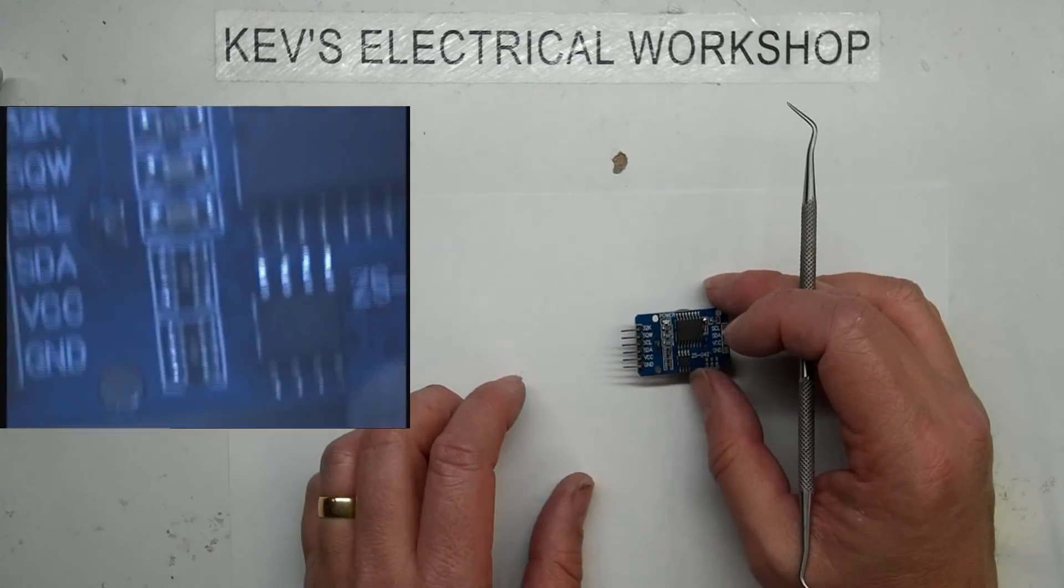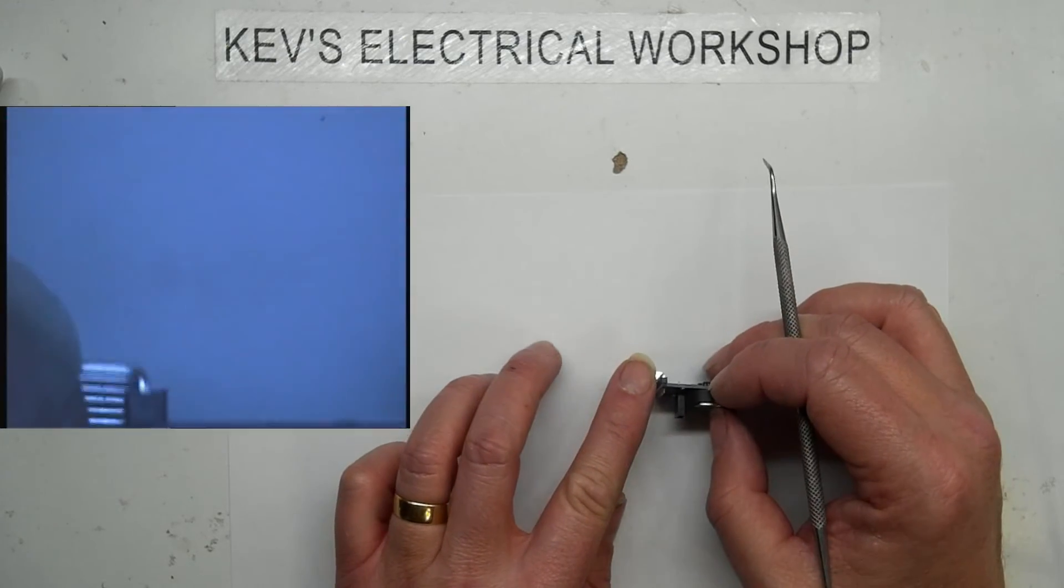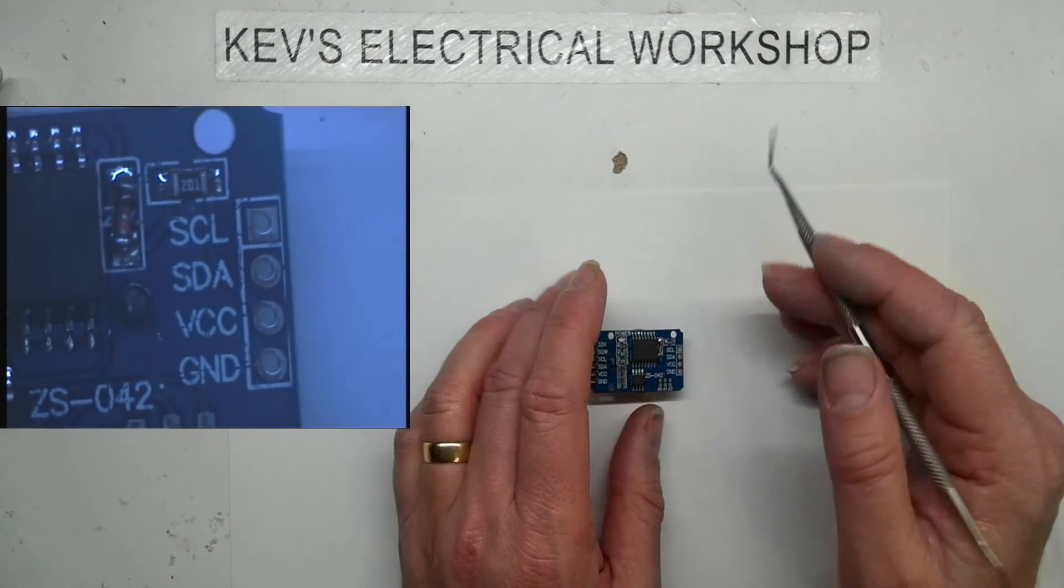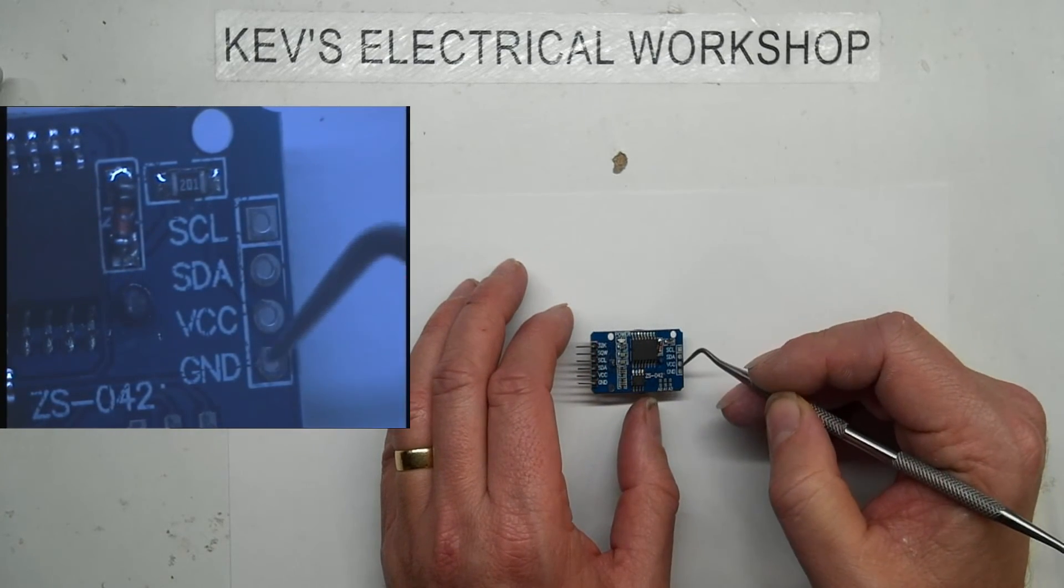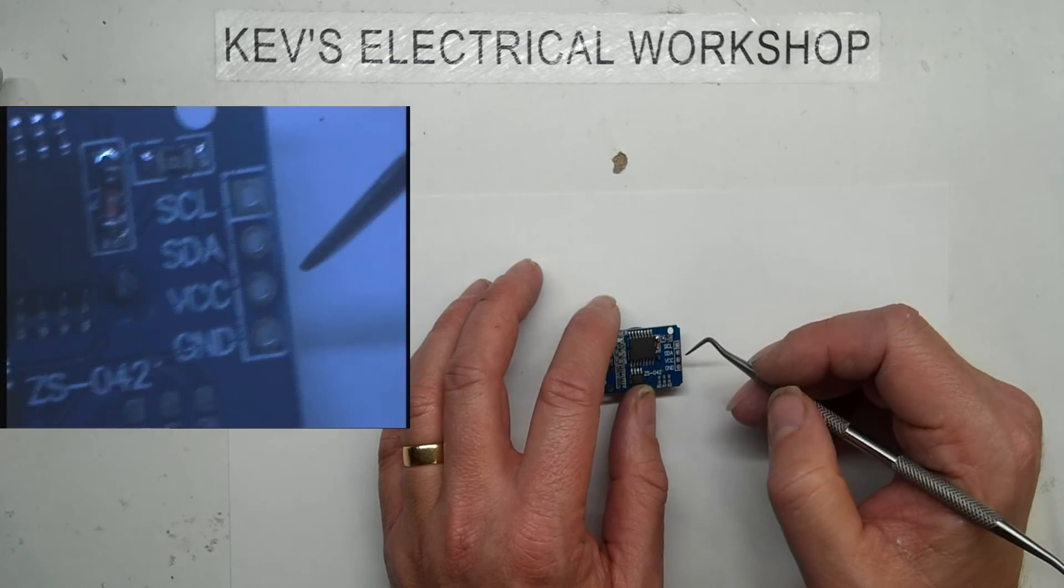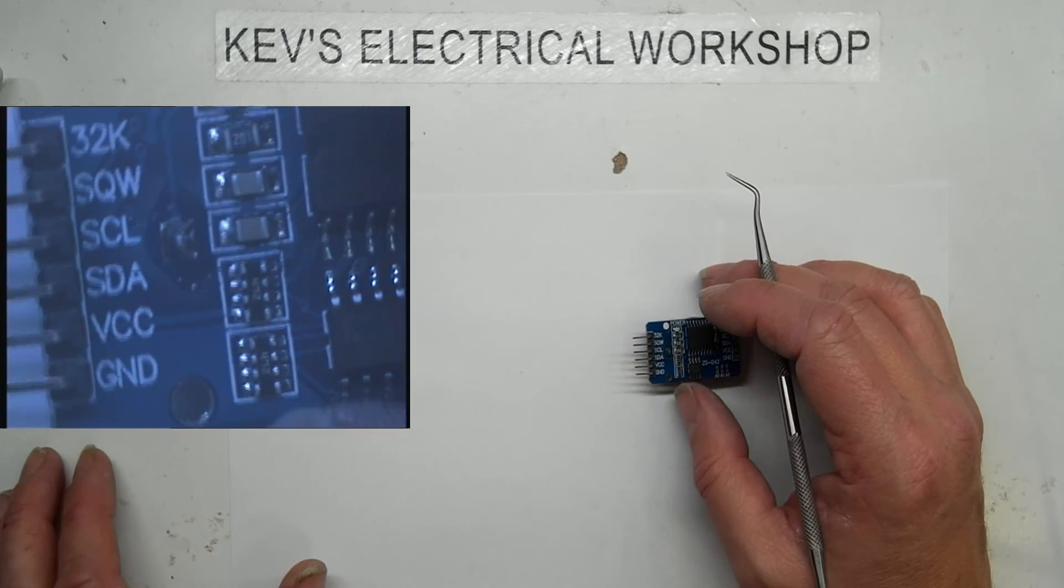It comes with a set of headers at right angle on this end and there's also a limited set. This end we've just got ground, VCC and the two SCL and SDAs.